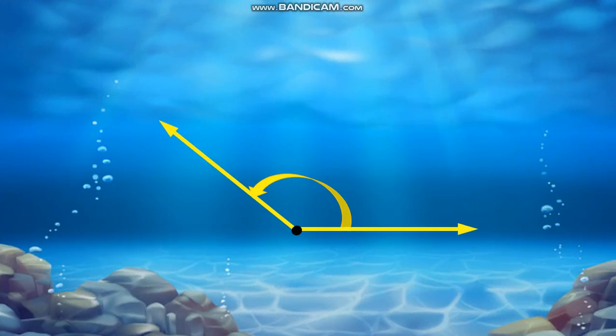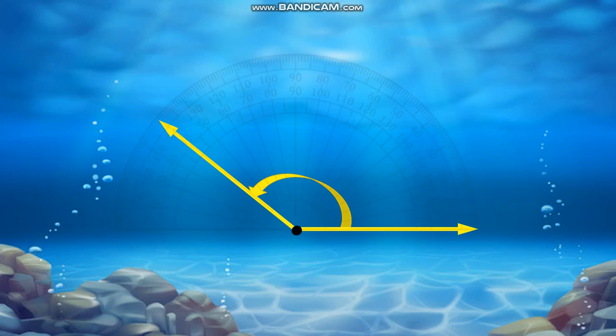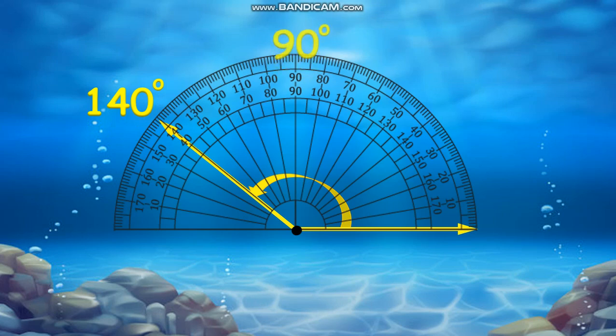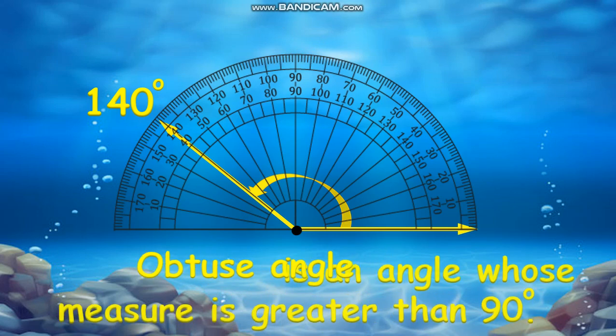Another kind of angle is an obtuse angle. Through the protractor, the second ray is focused at 140 degrees, and it is greater than 90. To summarize, an obtuse angle is an angle whose measure is more than 90 degrees.